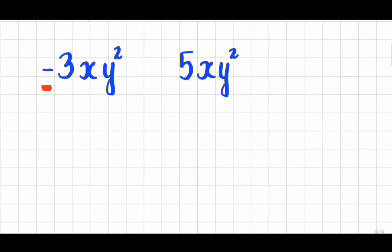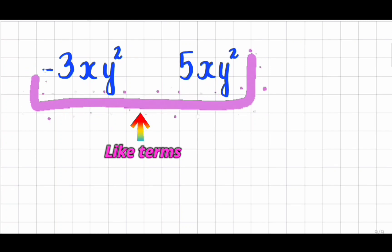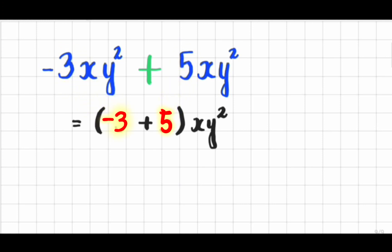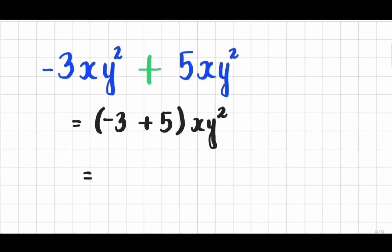For instance, negative 3xy squared and 5xy squared are like terms. And their sum is negative 3 plus 5 of xy squared which equals 2xy squared.